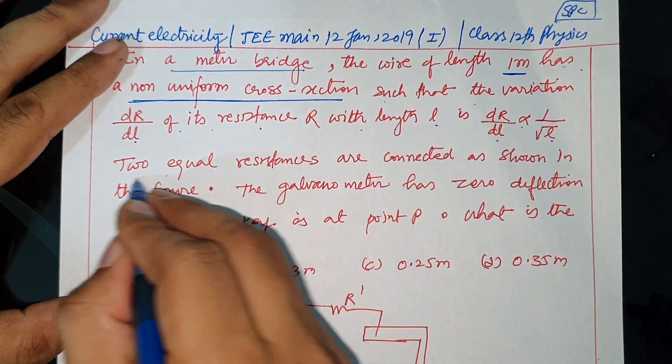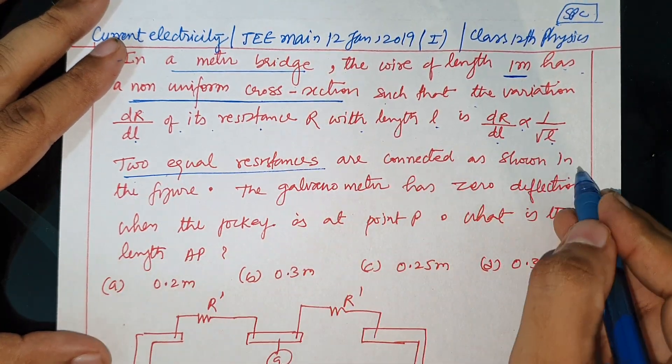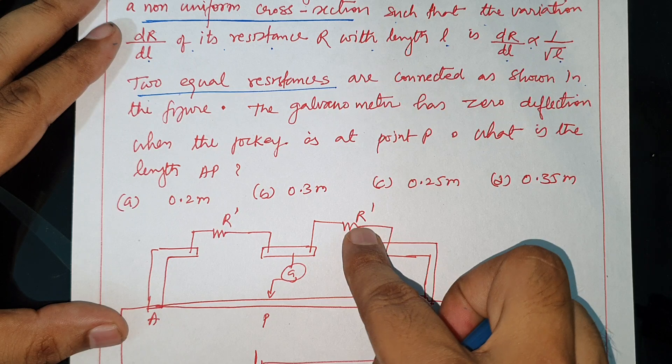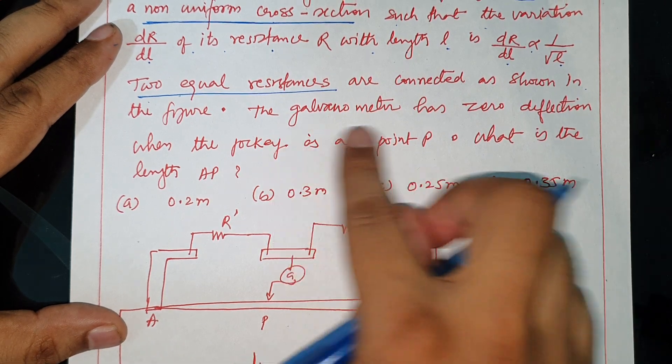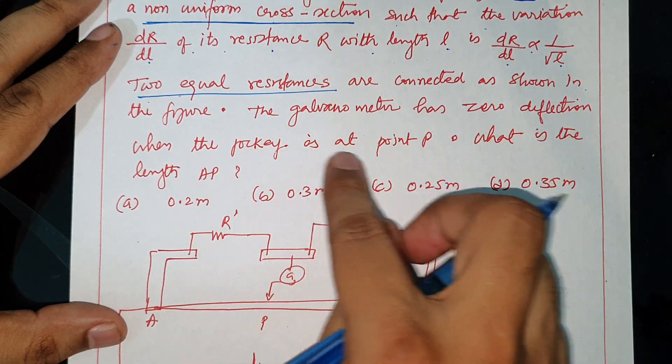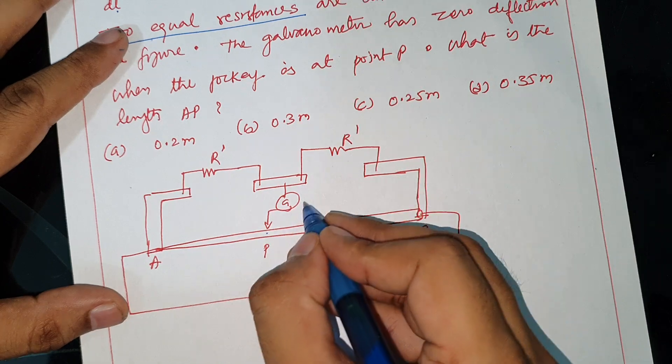The two equal resistances are connected as shown in the figure, R dash and R dash. The galvanometer has zero deflection when the jockey is at point P. Here is zero deflection, IG is zero.